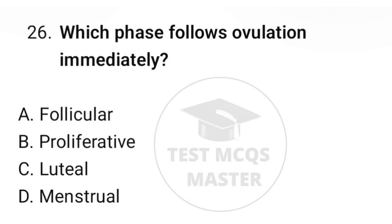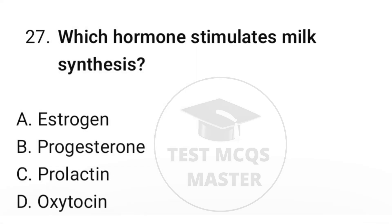Question number twenty-six: which phase follows ovulation immediately? The correct option is C, luteal. Question number twenty-seven: which hormone stimulates milk synthesis? The correct option is C, prolactin.